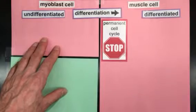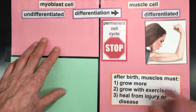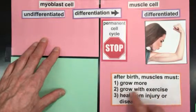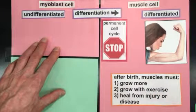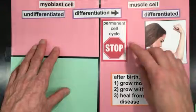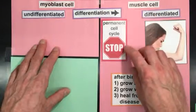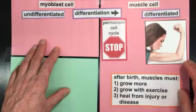That's significant because after birth, our muscles still grow. After birth, our muscles must grow more as we grow. Muscles can grow in response to exercise, and muscles can also heal from injury or disease. How can that happen, given that the differentiated muscles have permanently arrested in the cell cycle and are not going to go through mitosis again?